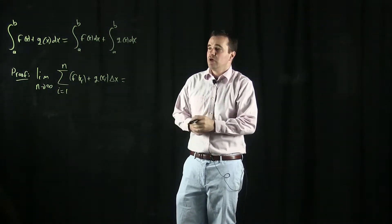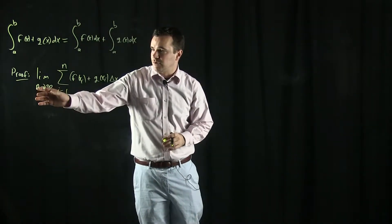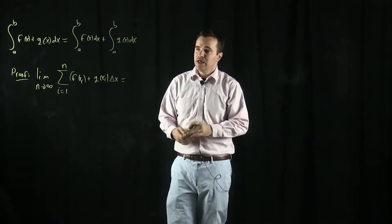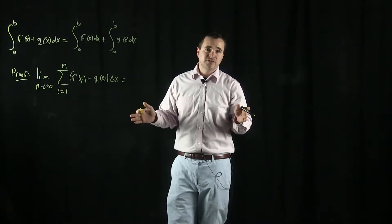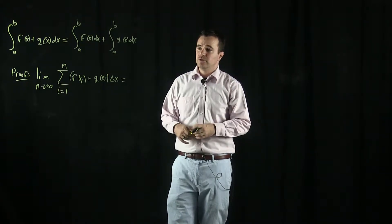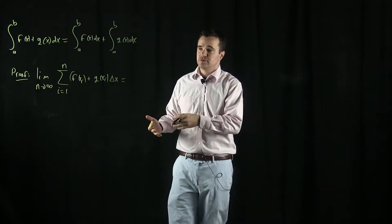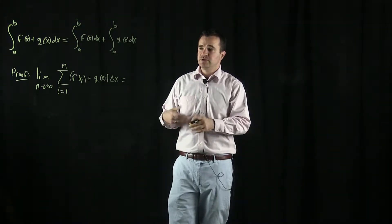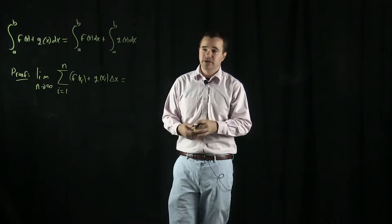That's the common width of the n subintervals. And then you're dividing it into smaller and smaller subintervals, taking that limit. And xi are the endpoints, they're the points that determine the partition of the interval into n equal subintervals. So x0 is equal to a, x1 is equal to a plus delta x, xi is equal to a plus i times delta x, so on and so forth.